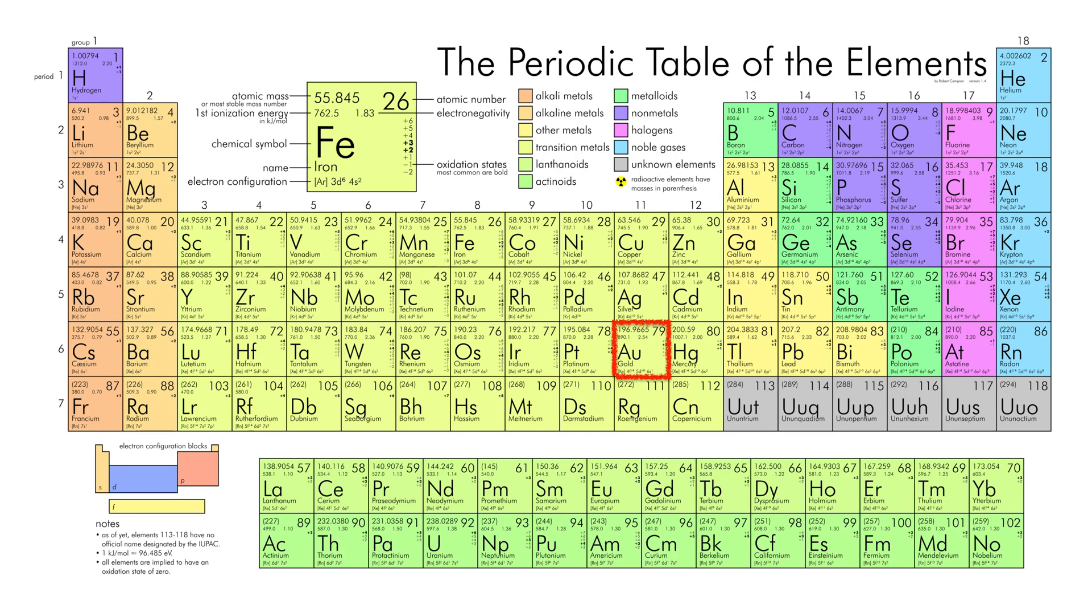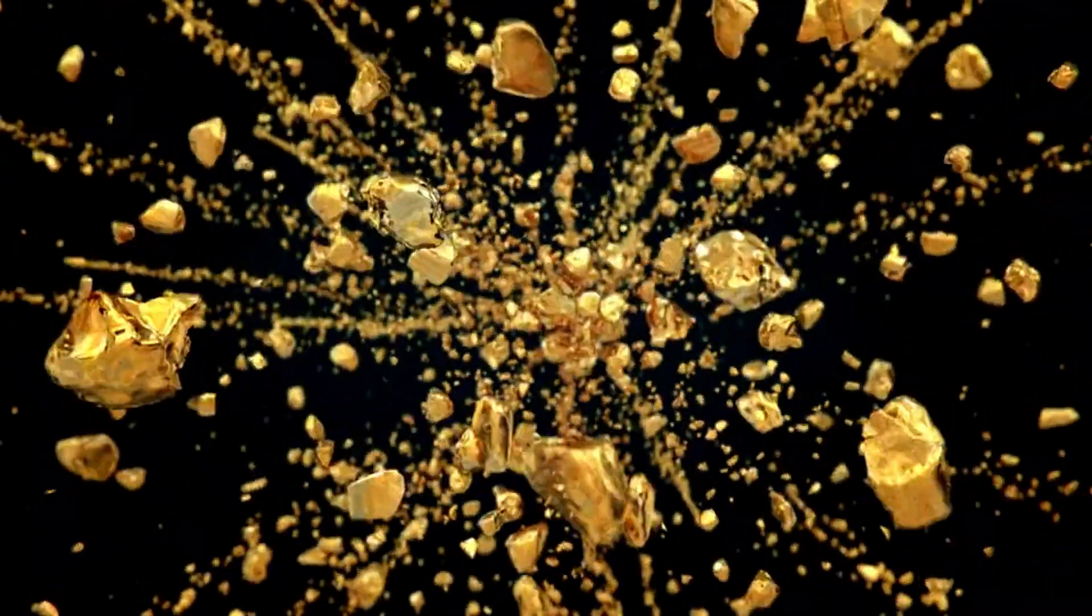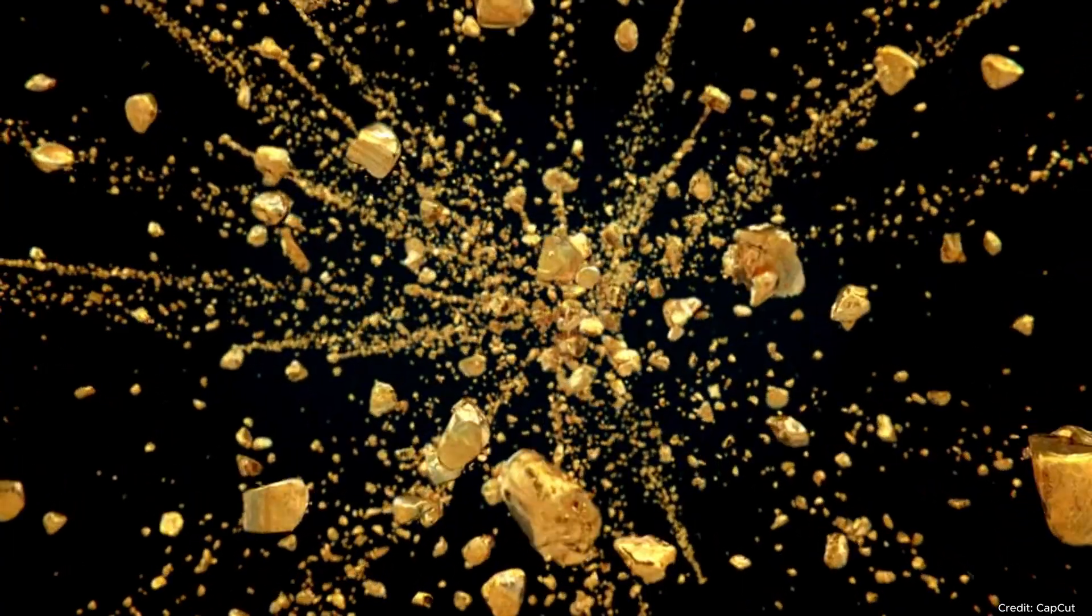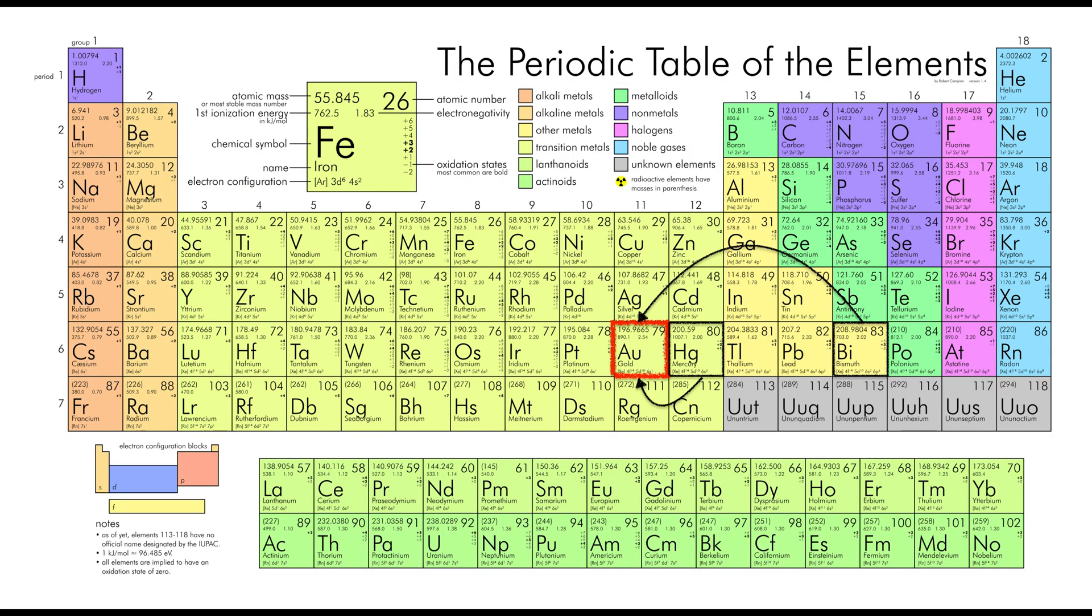Gold, with its atomic number 79, can be synthesized artificially through a process called nuclear transmutation. But while science says yes, economics and technology firmly say no. The journey from mercury or bismuth to gold is technically fascinating but ultimately impractical on Earth.